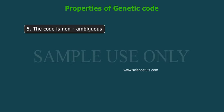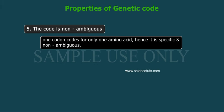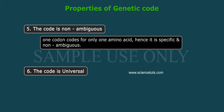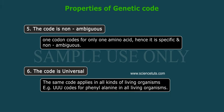Property 5: The code is non-ambiguous. One codon codes for only one amino acid. Hence, it is specific and non-ambiguous. Property 6: The code is universal. The same code applies in all kinds of living organisms. For example, UUU codes for phenylalanine in all living organisms.